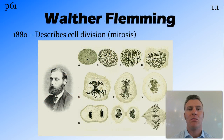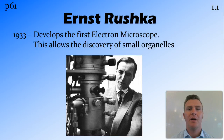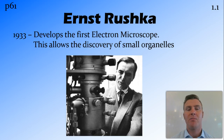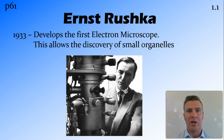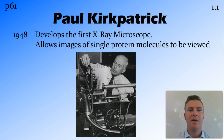In 1880 Walter Fleming was looking at some cells and described the process of cell division, which we now call mitosis. Fast forward to 1933, and Ernst Ruska developed the first electron microscope. The electron microscope was one of the biggest advances in microscopy because it meant we could look at things with far greater clarity than before, allowing the discovery of all the smaller organelles inside the cell. In 1948 Paul Kirkpatrick developed an X-ray microscope, and since X-rays have an even smaller wavelength than electrons, you can see with even more clarity — right down to the level of single protein molecules.